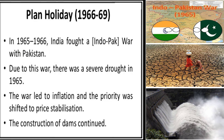After the Third Five-Year Plan, three one-year plans were implemented from the years 1966 to 1969. This was called a plan holiday. In 1965-66, India fought a war with Pakistan. Due to this war, there was a severe drought in 1965. The war led to inflation and the priority was shifted to price stabilization. During this same year, the construction of dams continued.